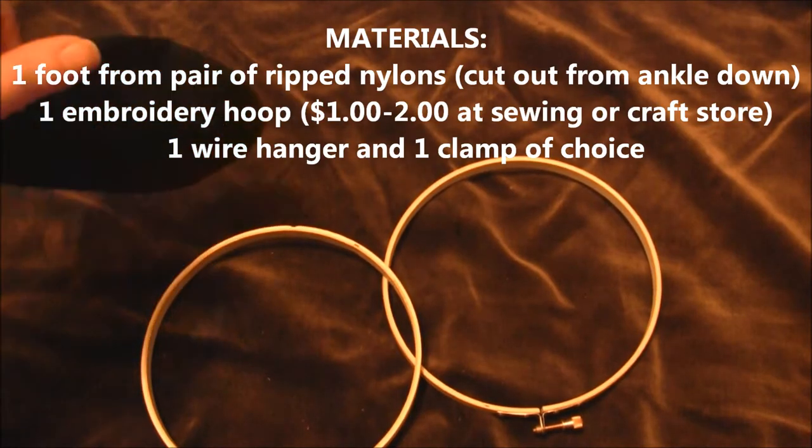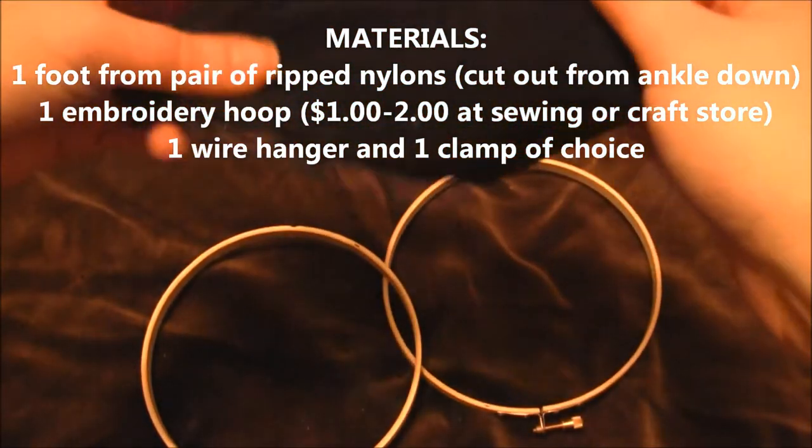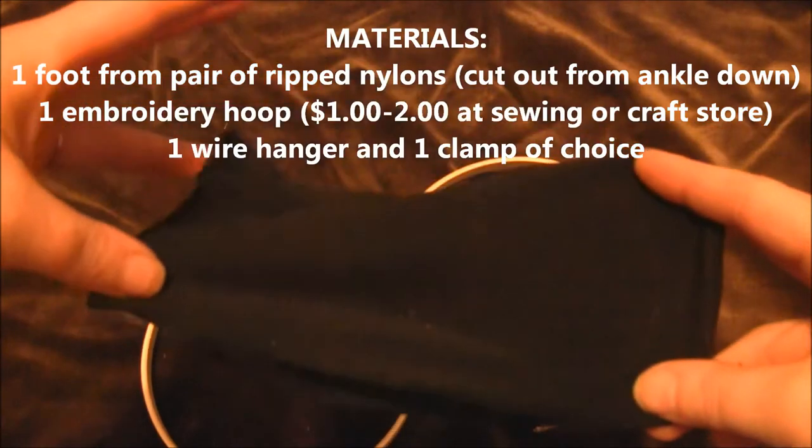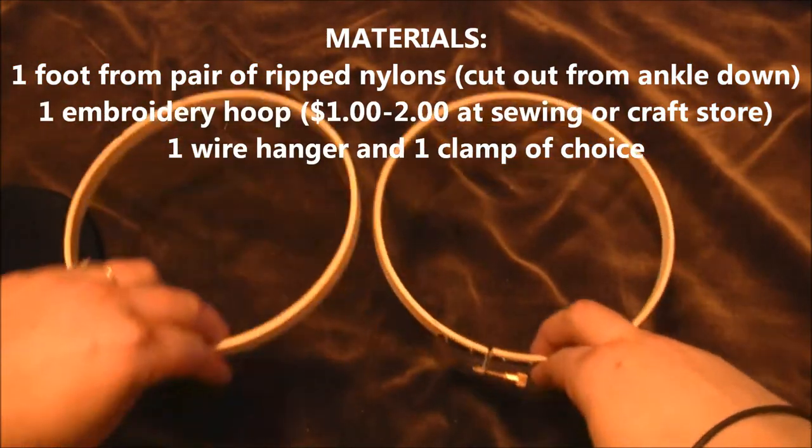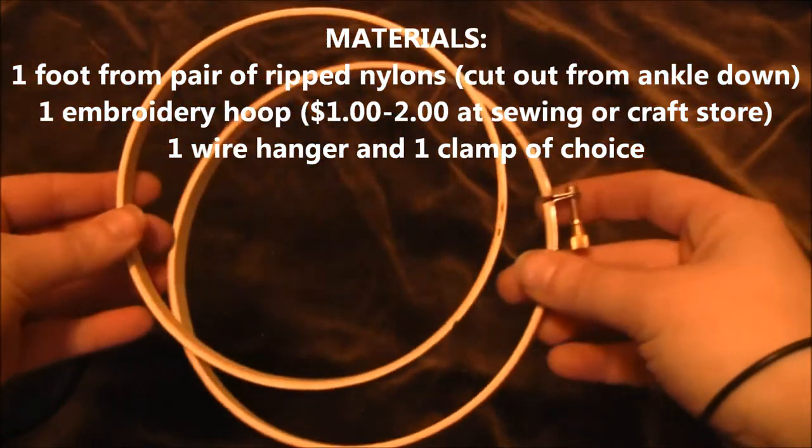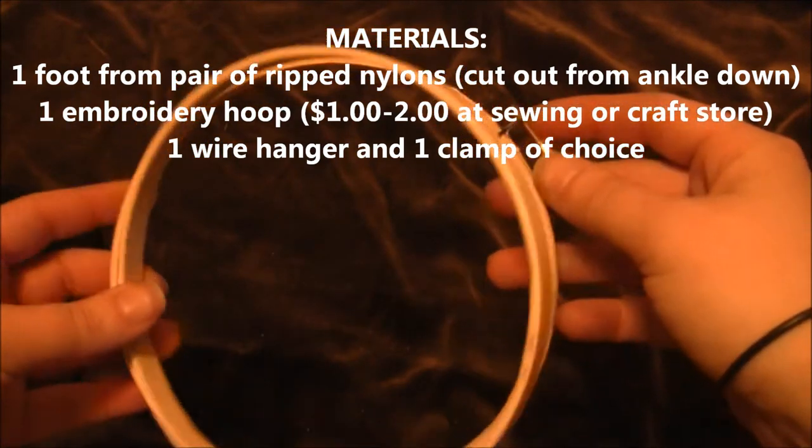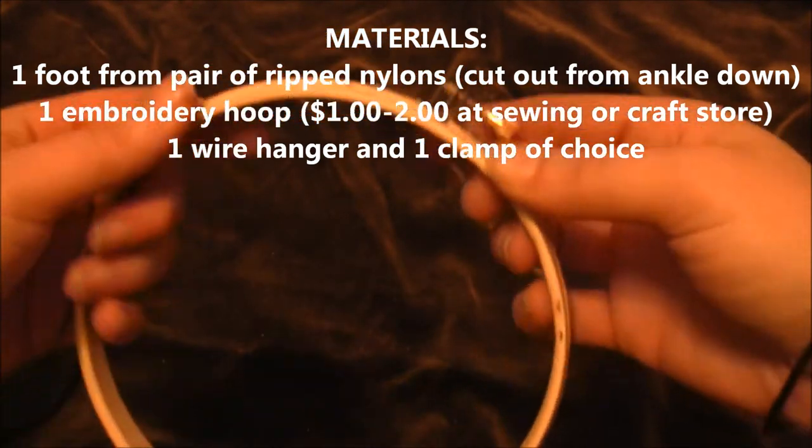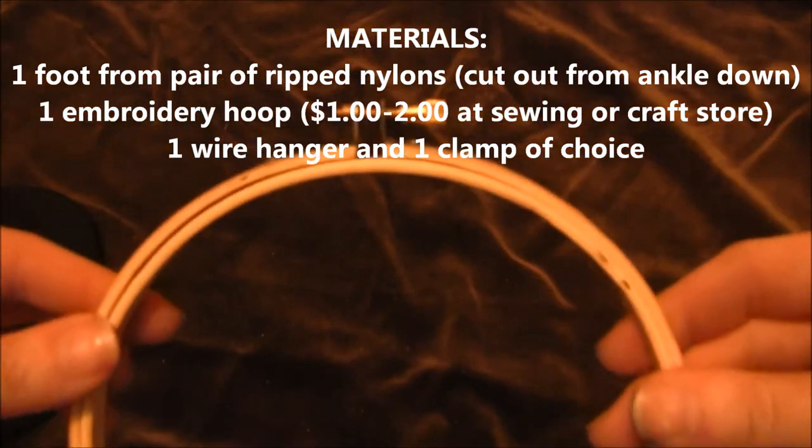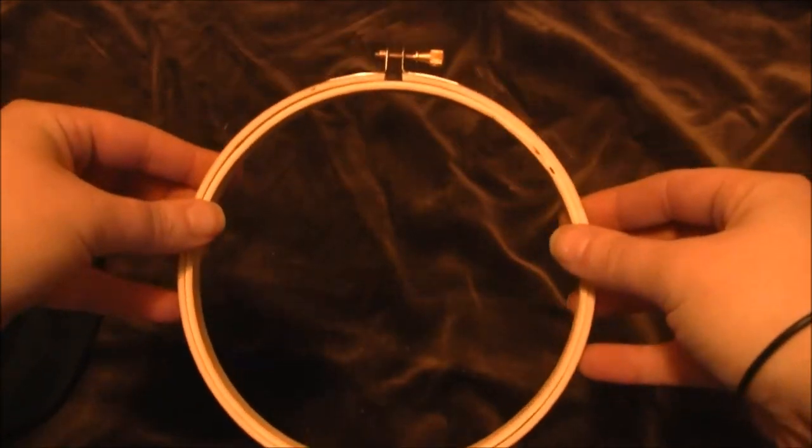First, we're going to start out with embroidery hoops and a little piece of some nylons, preferably the foot part where you cut it out. And then we take the embroidery hoop, which costs about $1.19 at any sewing shop or craft store, and you remove the inner part of the hoop.